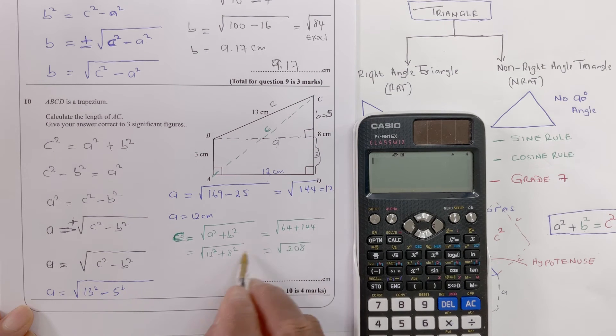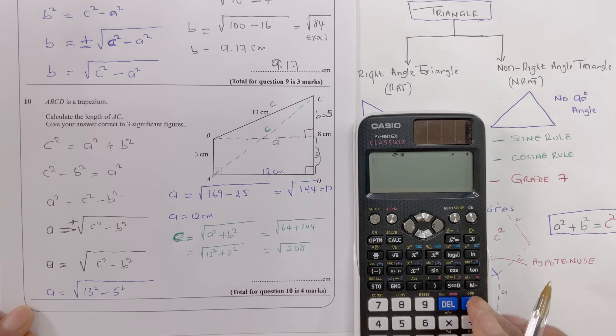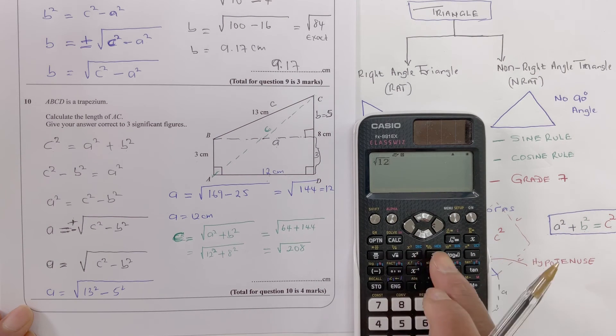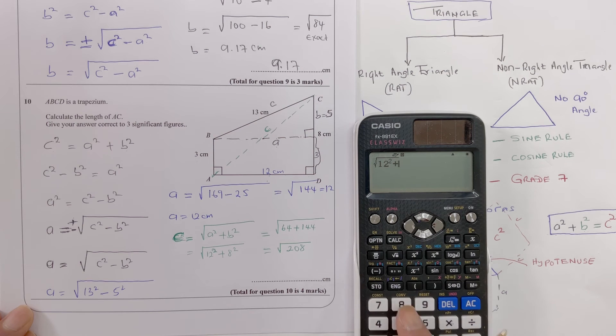That's how I get my 12 is 144, 12 squared is 144, 8 squared is 64. And so we can do that here which is root 12 squared plus 8 squared.